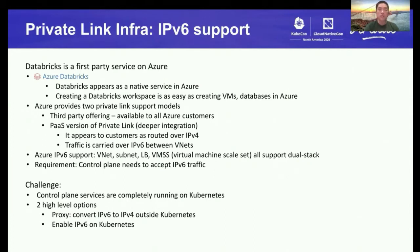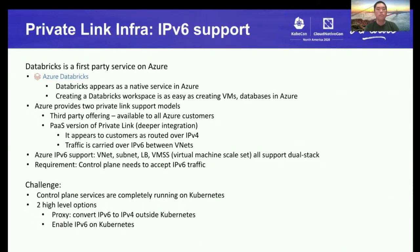So what is the challenge on the infrastructure side to integrate with PrivateLink? First of all, Databricks is a first-party service on Azure — it's called Azure Databricks and it appears as a native service. Creating a Databricks workspace is as easy as creating other resources like virtual machines or a database in Azure. From the Azure side, they provide two types of PrivateLink support models. The first is the third-party offering, available to all Azure customers and purely on IPv4. The second type is called the PaaS version of PrivateLink, which provides deeper integration with other Azure services, and all first-party services on Azure use this PaaS version.